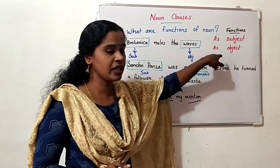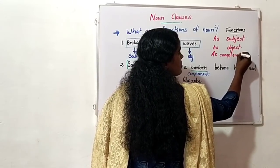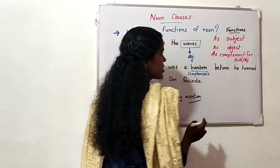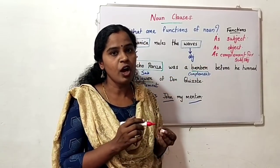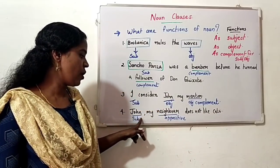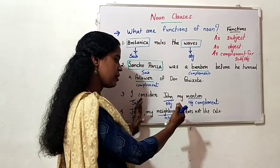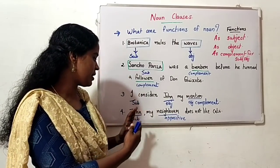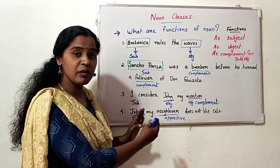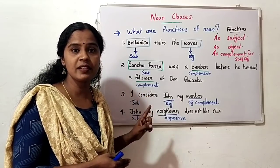So another function of noun is as a complement for subject and object. Next example: 'John, my neighbor, does not like cats.' John is the subject. The portion 'my neighbor' can be taken away — 'John does not like cats' still has complete meaning. 'My neighbor' is an interrupting definition — an appositive.